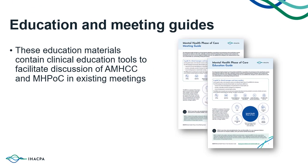There are two guides in resource five. The first guide provides a simple and effective way to run education on mental health phase of care within teams. The second guide suggests clinician-validated ways to bring a routine consideration of the mental health phase of care into multidisciplinary team meetings. The guide allows clinicians to discuss real consumers in their own local context rather than being limited to specific scenarios.